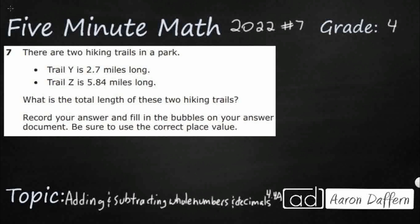So we've got two hiking trails. Trail Y is 2.7 or 2 and 7 tenths miles long. Trail Z is 5.84 or 5 and 84 hundredths miles long. So what is the total length of these two hiking trails? And there's no A, B, C, or D to choose from.